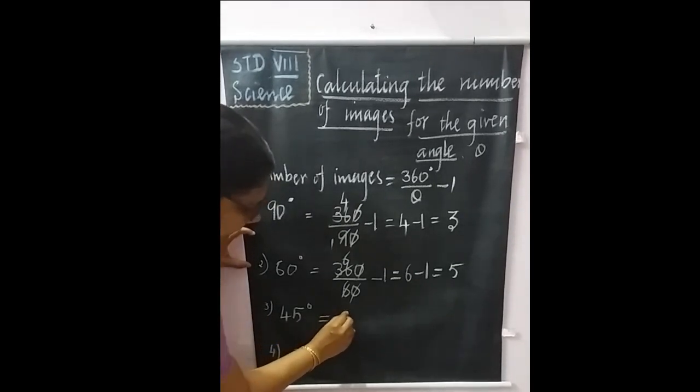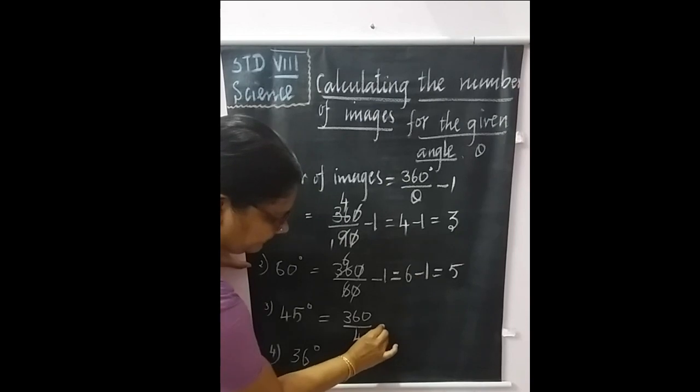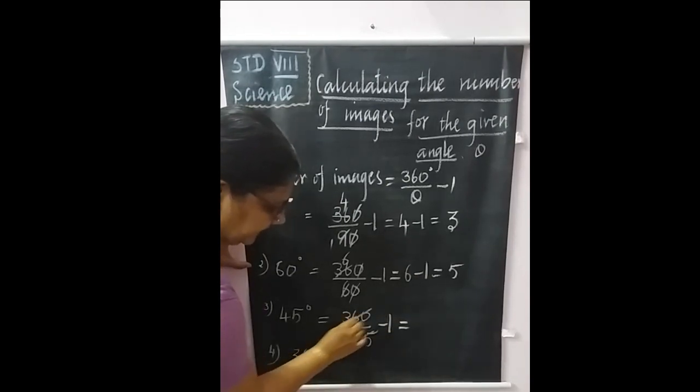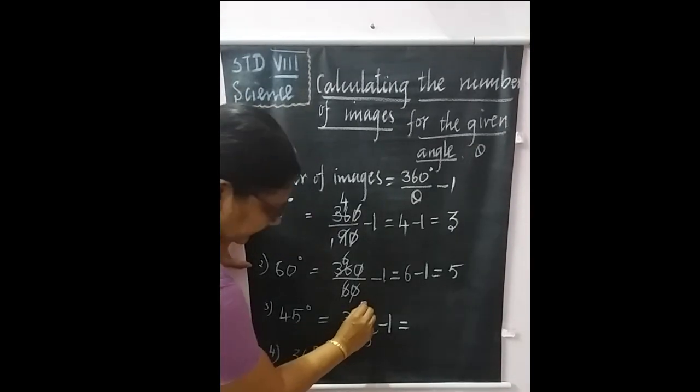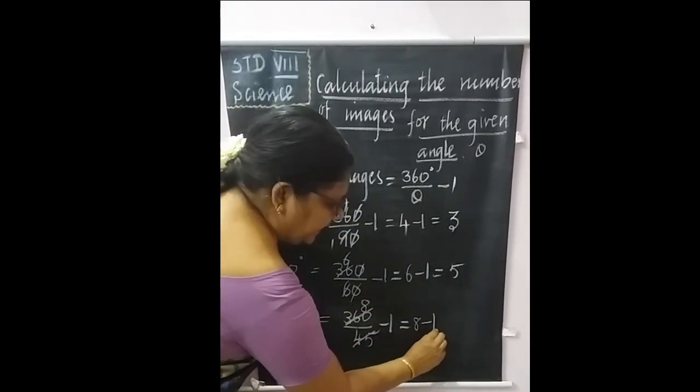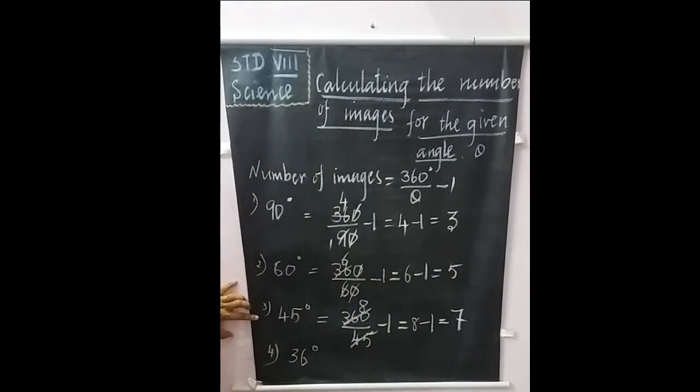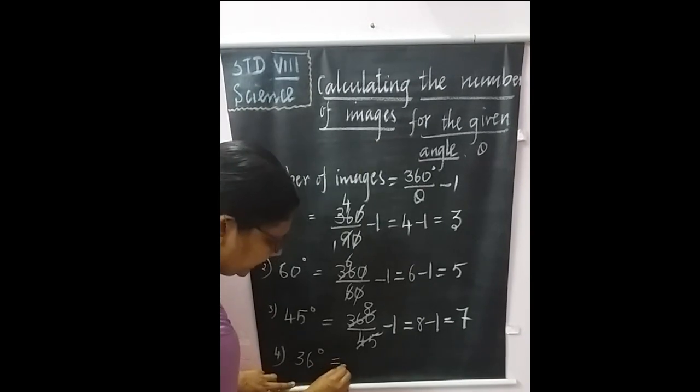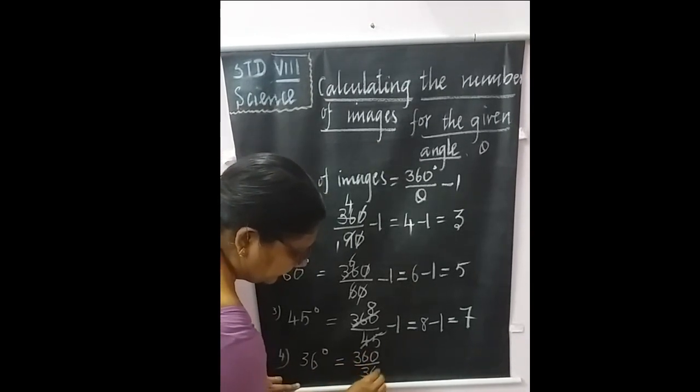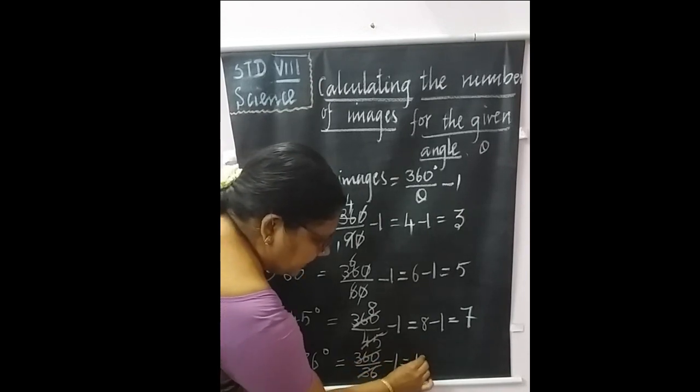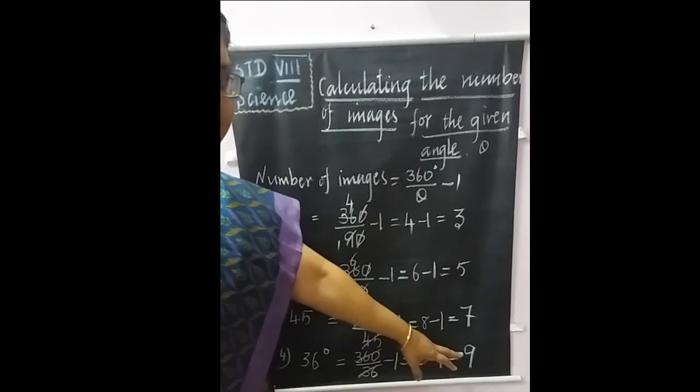Next with 45 degrees: 360 by 45 minus 1. You can directly cut with 45 table, I think it's 8 times. 8 minus 1 equals 7 images can be formed for 45 degrees. Then for 36 degrees, it's for 10 times, so 10 minus 1, 9 images can be formed.